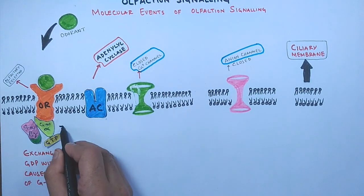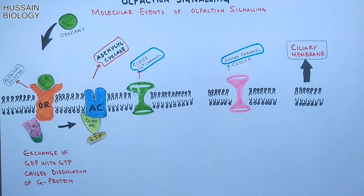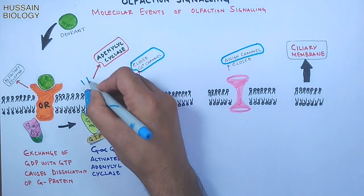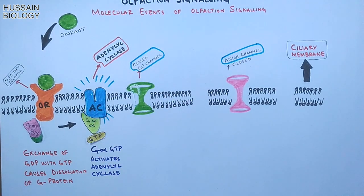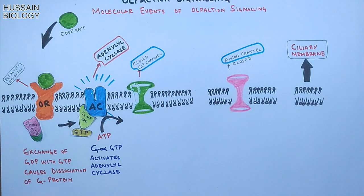The G alpha protein then gets to the adenyl cyclase where it activates the adenyl cyclase. The adenyl cyclase then drives the reaction where ATP is converted into cyclic AMP or cAMP.